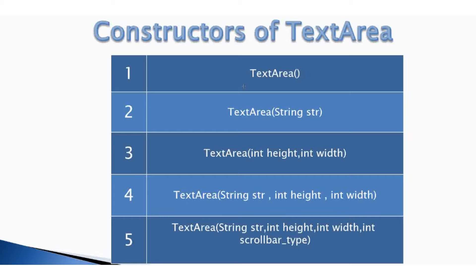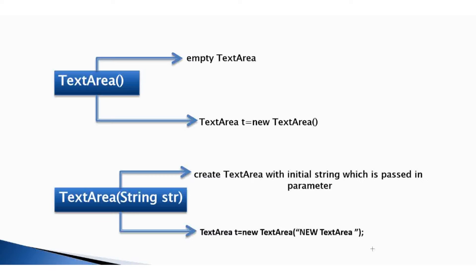The first constructor is a default constructor, the second takes one String parameter, the third takes two integer parameters, the fourth is a combination of the second and third constructors, and the last constructor takes four parameters. We will see each constructor in detail.